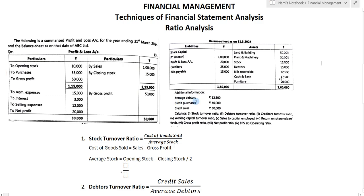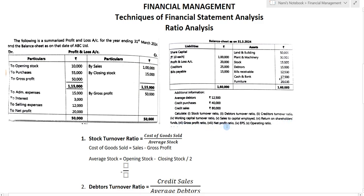The additional information includes: average debtors 12,500, credit purchases 40,000, and credit sales 80,000. On the basis of this profit and loss account, balance sheet, and additional information, we are required to calculate ten ratios: stock turnover ratio, debtors turnover ratio, creditors turnover ratio, working capital turnover ratio, sales to capital employed, return on shareholders fund, gross profit ratio, net profit ratio, EPS, and operating ratio.